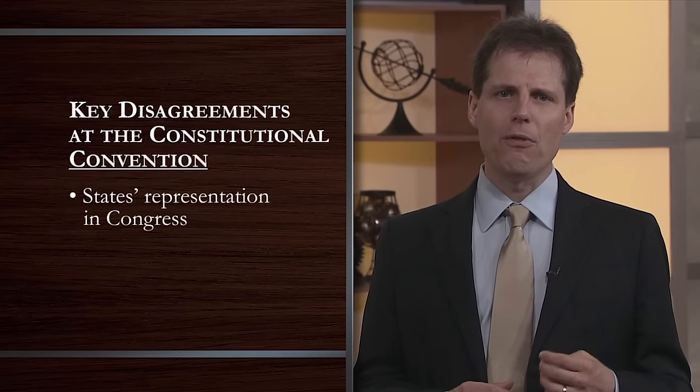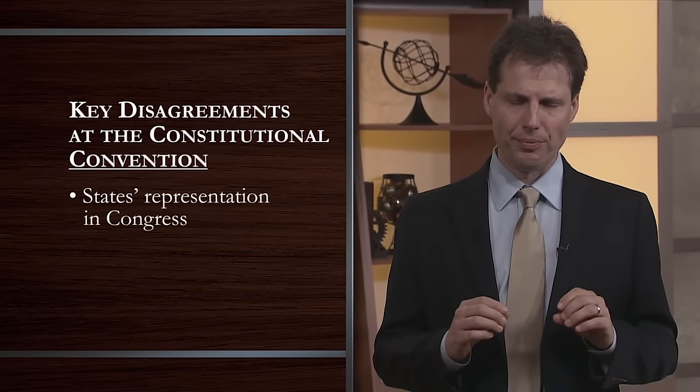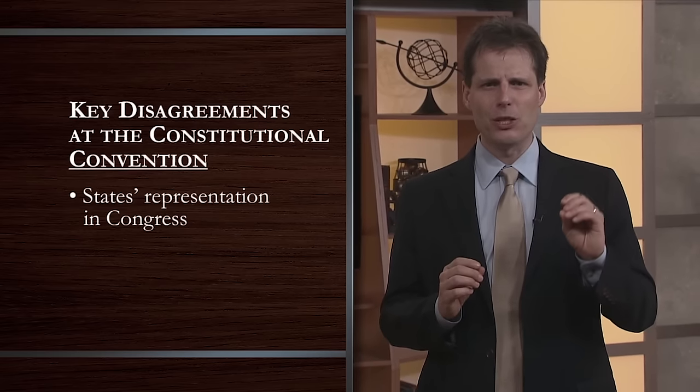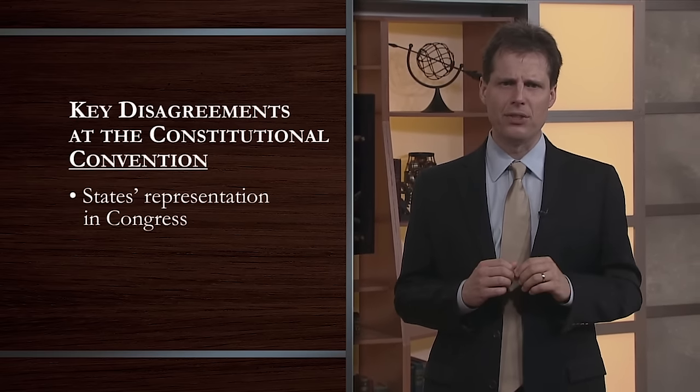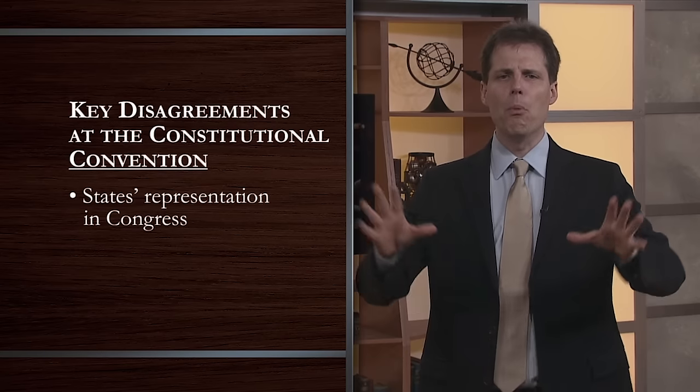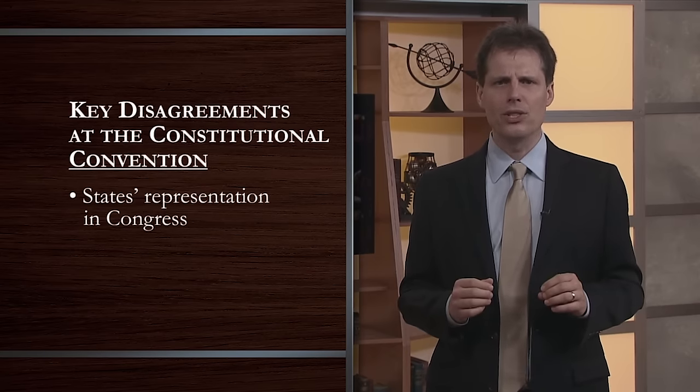From the start, it became apparent that the delegates could not agree on much. Two disagreements dominated the convention. The first involved the question of how states would be represented in Congress. Many delegates assumed that states would have proportionate representation in the House of Representatives, meaning that states with larger populations would get more representatives. But what about the Senate? Some delegates, such as James Madison, believed the Senate too should have proportionate representation, while others, especially from smaller states, believed that each state should have the same number of representatives. The Constitution ultimately provided that each state would get two senators, but the delegates debated the issue over and over again.